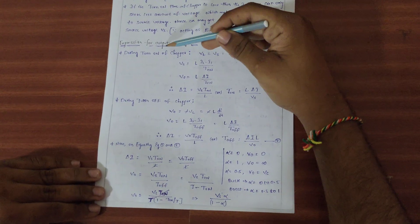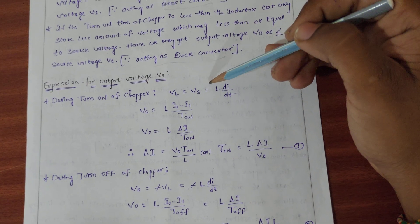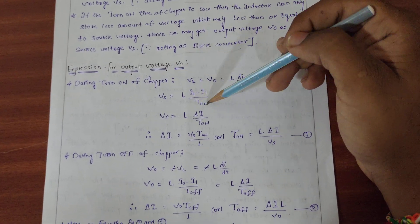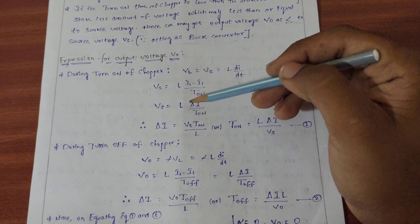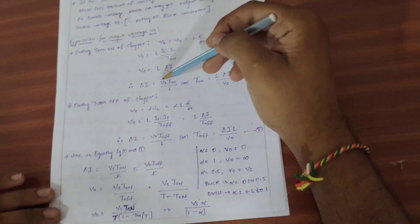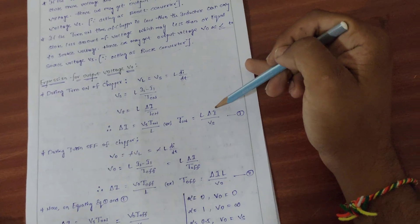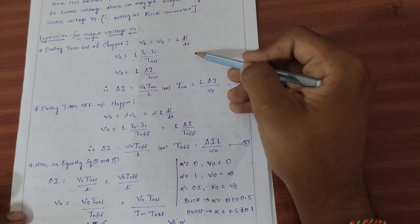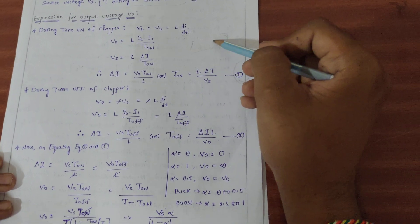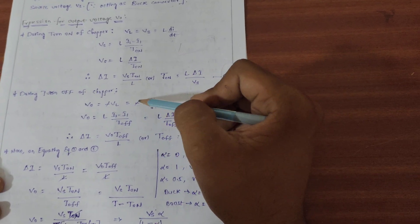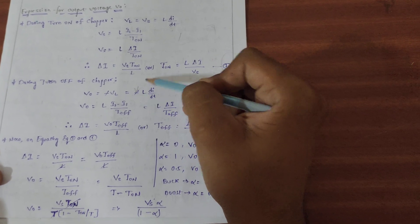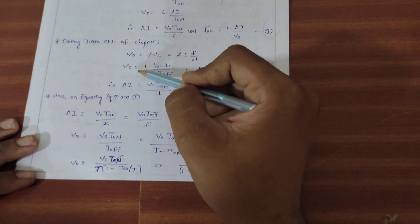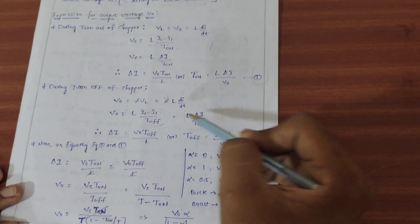Now let us derive the output voltage of the buck-boost converter. During turn-on time of the chopper: VL = VS = L × di/dt. The change in current is i2 minus i1 over the turn-on time, so delta_i = VS × t_on / L. During turn-off of the chopper, V0 = -VL = -L × di/dt. With the minus signs cancelling: V0 = L × (i2 - i1) / t_off, giving delta_i = V0 × t_off / L.